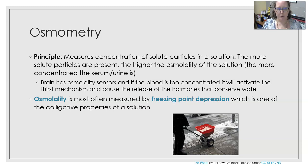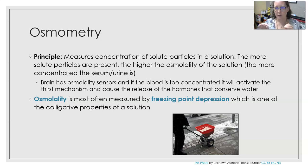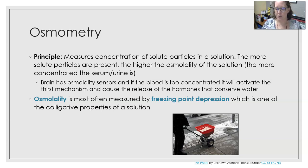The brain has osmolality sensors, and if the blood is too concentrated, it will activate the thirst mechanism and cause a release of hormones that will conserve water. So if a nephrologist, for example, was wanting to assess what is going on with their patient in regards to the concentration of urine and make sure that the blood is appropriate, they would order a urine osmolality and a serum osmolality.